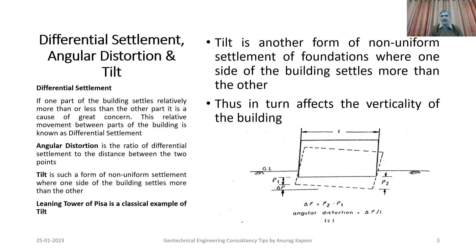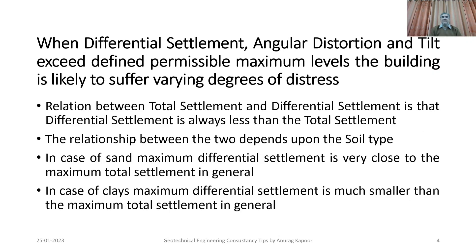When differential settlement, angular distortion, and tilt exceed defined permissible maximum levels, the building is likely to suffer varying degrees of distress. The relationship between total settlement and differential settlement is that differential settlement is always less than total settlement. The relationship between the two depends upon soil type: in the case of sand, maximum differential settlement is very close to maximum total settlement, whereas in the case of clays, maximum differential settlement is much smaller than maximum total settlement.